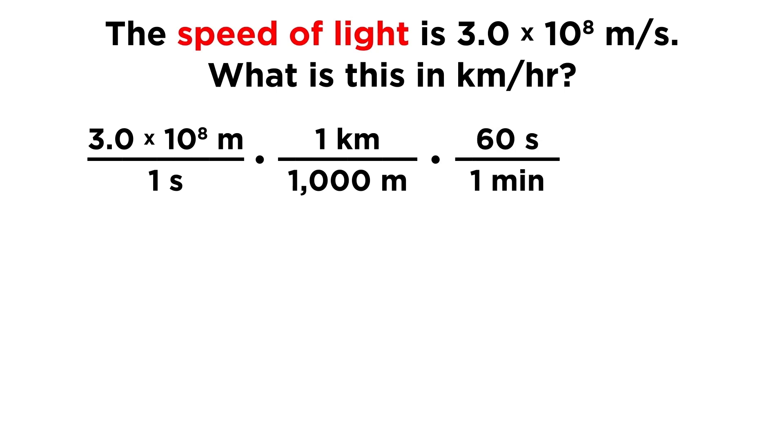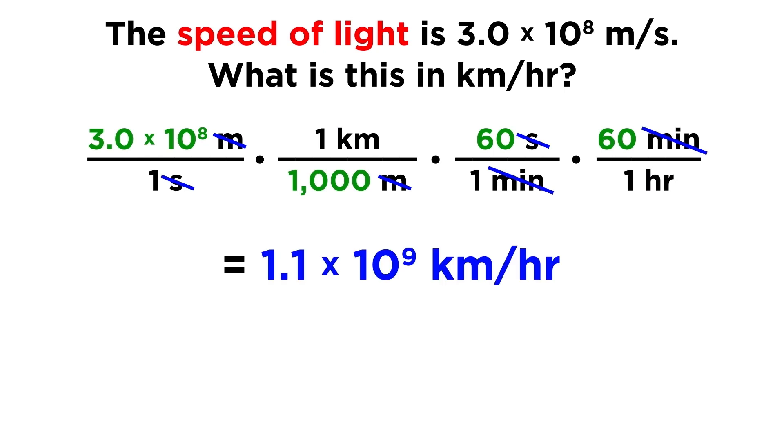Then, to get rid of seconds, we can say 60 seconds over 1 minute, and 60 minutes over 1 hour. All the units we don't need will cancel out. We do the arithmetic, and we get around 1.1 times 10 to the 9, so about a billion kilometers per hour.